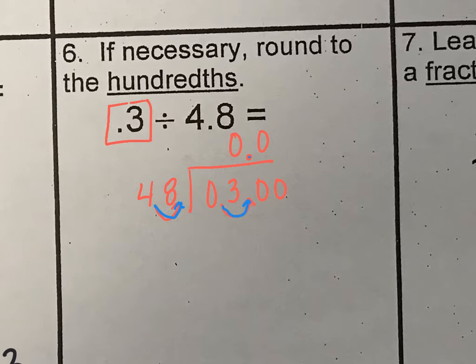Now it can go into 300, and we're looking for the nearest hundredth. So we have the hundredth spot would be right here, so we're going to have to go at least one more spot past that. So it can go into 300 six times. And we got 288. We subtract that down and add another 0 and drop it down. Now 48 can go into 120 twice. And it's going to be 96.